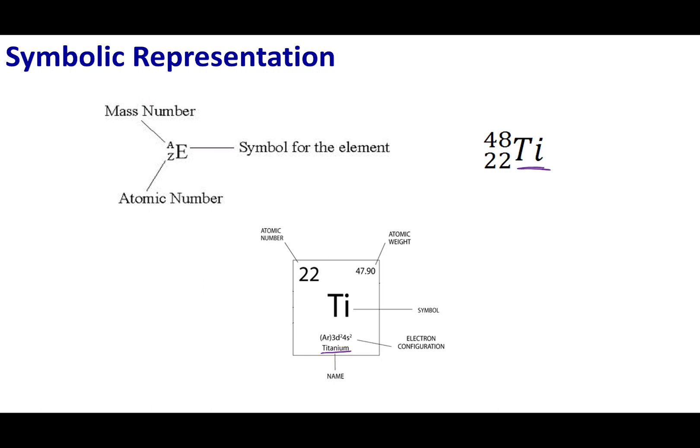Once we have the abbreviation for the element, we can add a couple more things to it. On the bottom left-hand side, we can put a number, and this is called the atomic number. This is going to be the number of protons. What I want you guys to note is the number of protons are going to define the element.